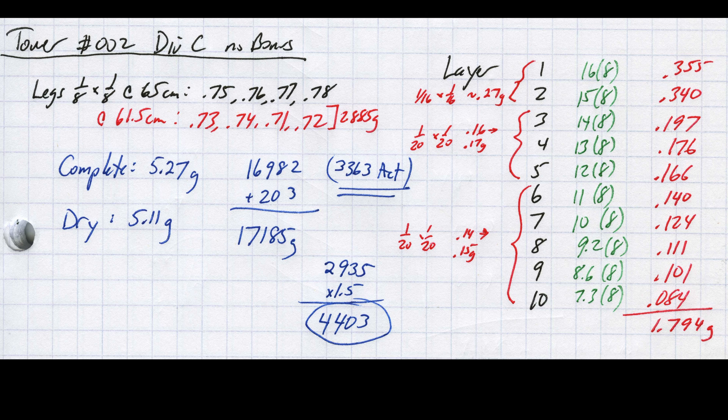The first is the title. I like to number my builds sequentially and reference which design it is. Here you can see that it was my second build using the Division C rules with no bonus. For the legs, you can see that I documented that they were 1/8 by 1/8.